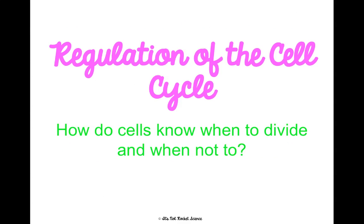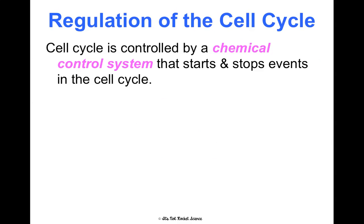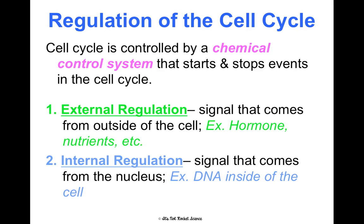Last but not least, let's talk about how the cell cycle is regulated — how cells know when they're supposed to divide or not, and what happens if this regulation gets messed up. The cell cycle is controlled by a chemical control system that starts and stops events in the cell cycle. It can be regulated externally — a signal from outside the cell like a hormone, nutrients, or environmental factors — or internally, which is a signal inside the cell's nucleus from the DNA saying it needs to divide.